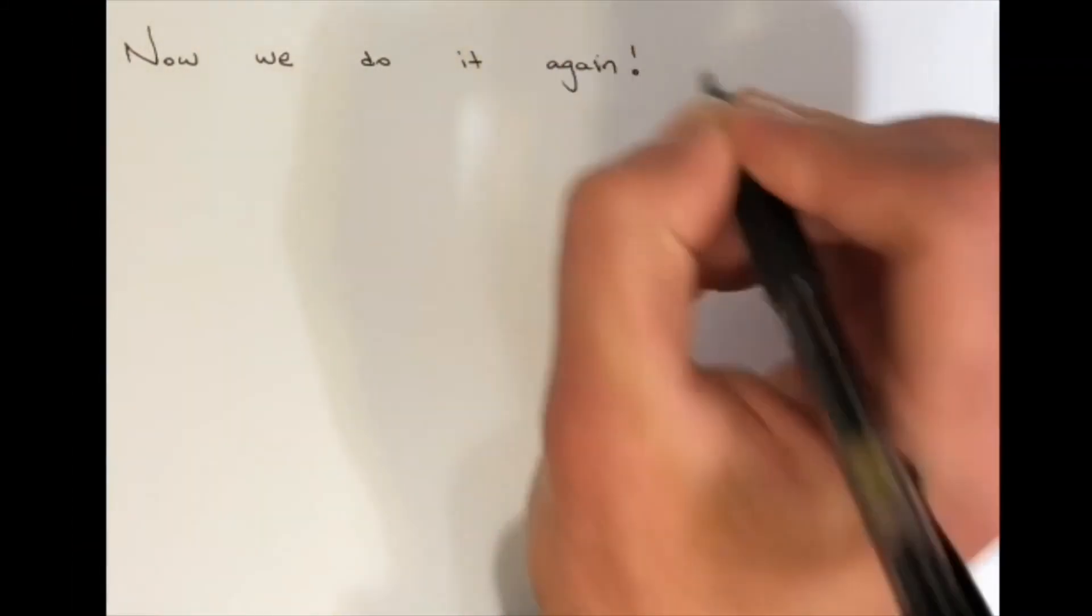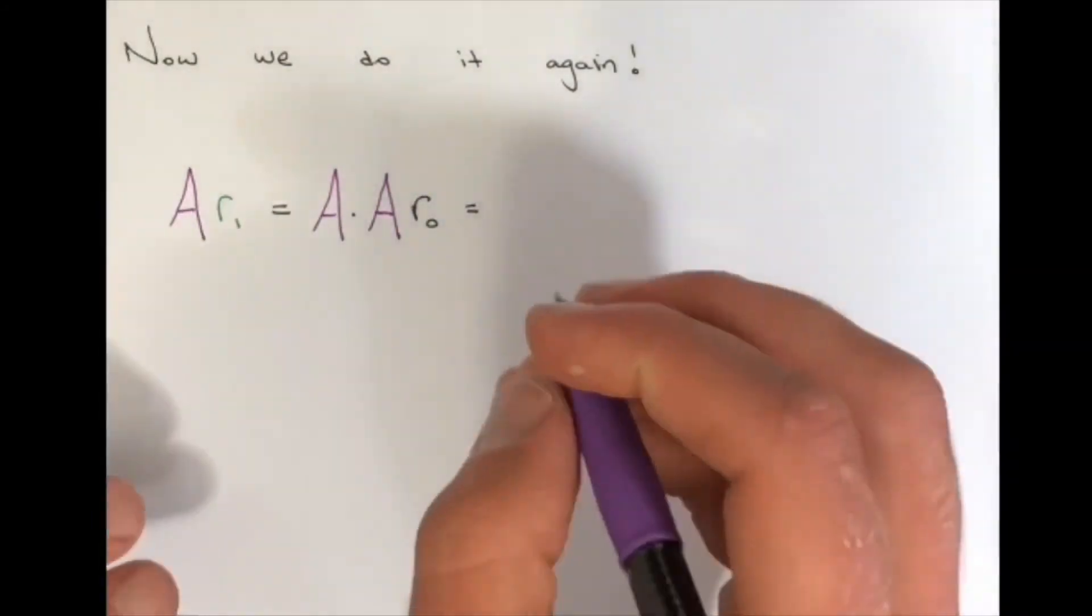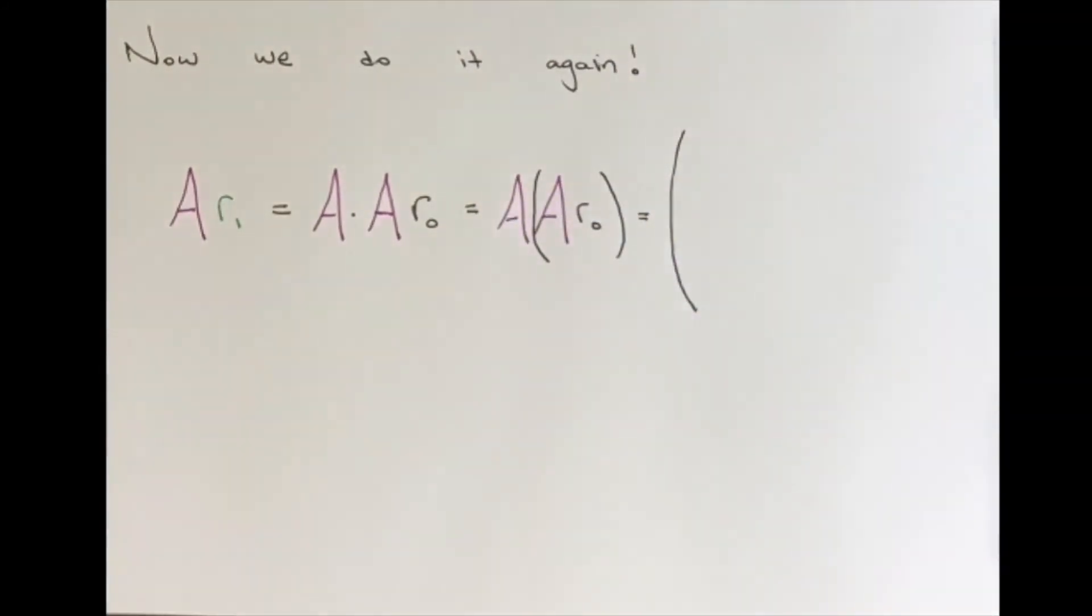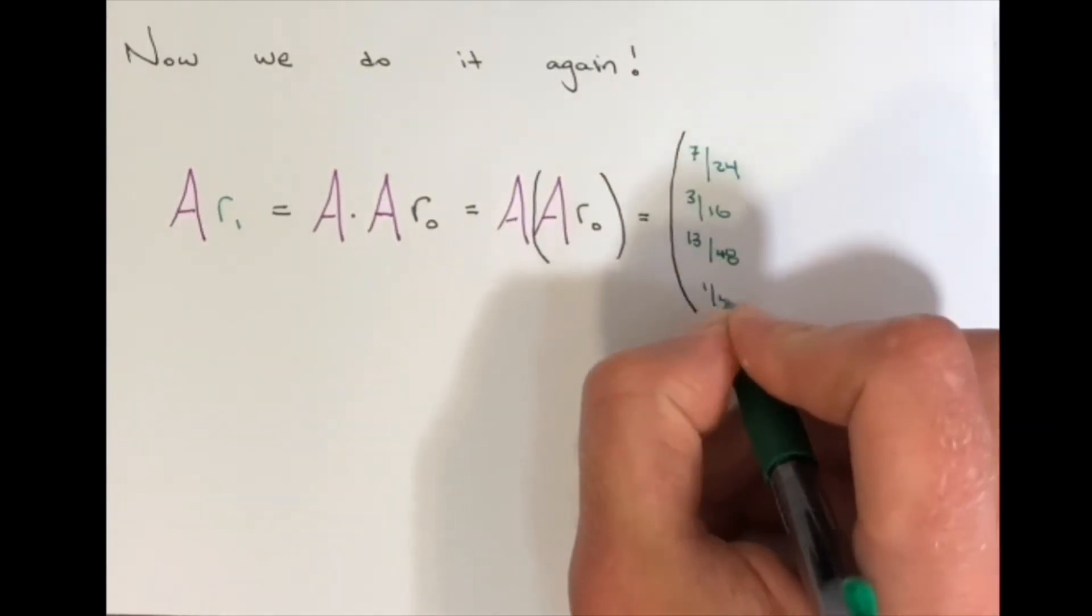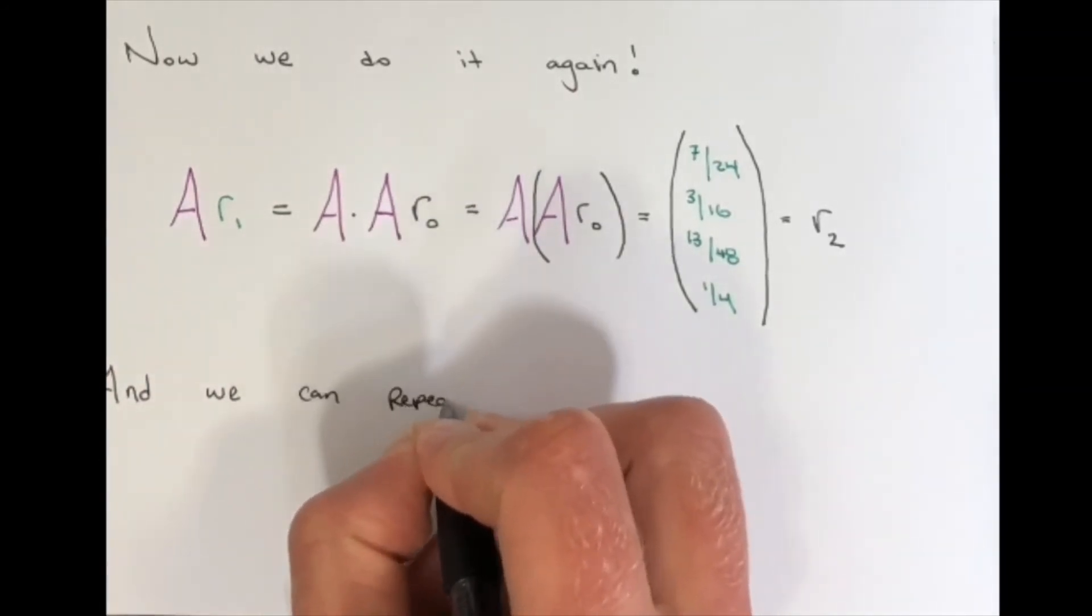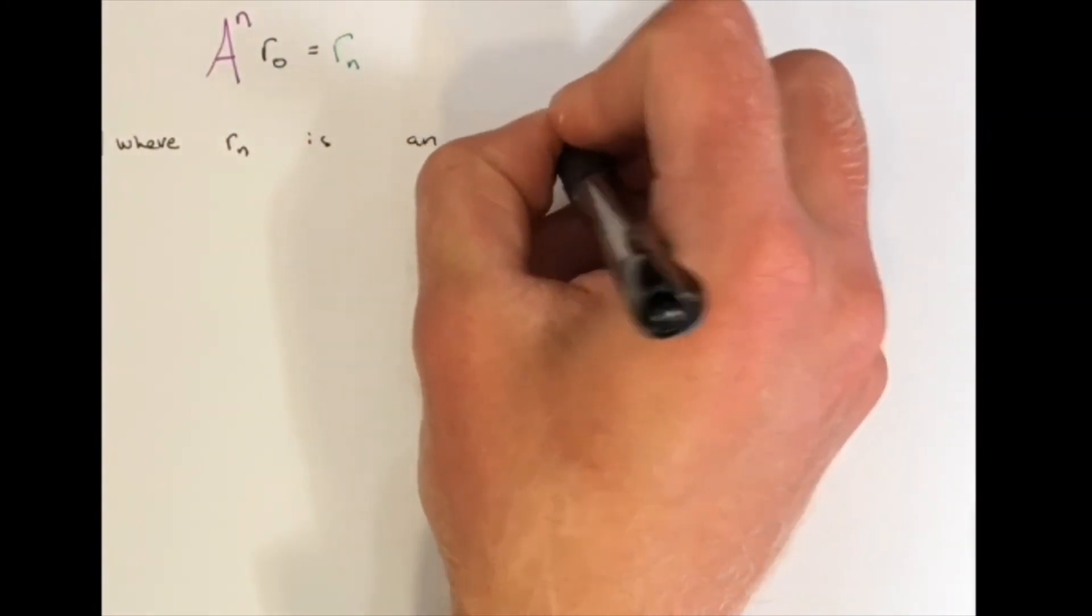Now we'll do the matrix multiplication again, but this time we'll multiply our link matrix by our second R vector. When we do this matrix multiplication again, we get another vector, which we'll call R subscript 2. Now we repeat this process, where we continue to multiply our link matrix by our new R value. Since we want to continue multiplying our link matrix by our new R value, we could write it as an equation. Our equation would be A to the nth power times R0 equals Rn, where Rn is an eigenvector for the eigenvalue 1.